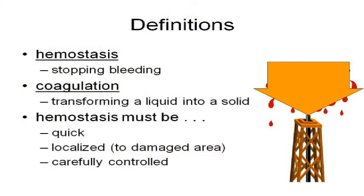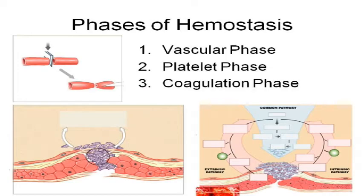So we want this process to be fast, but we want it to stay where we need it, and we have to control it carefully so it doesn't get out of control. Remember that blood clotting is one of those things that's a positive feedback loop — blood clotting and childbirth. Now the phases of hemostasis: three major phases.